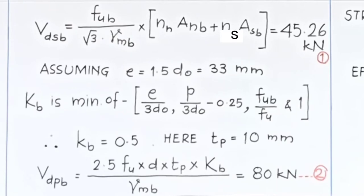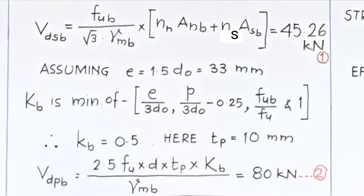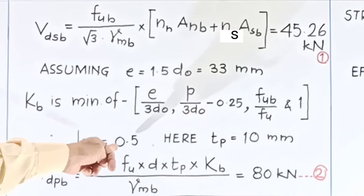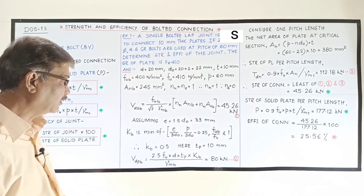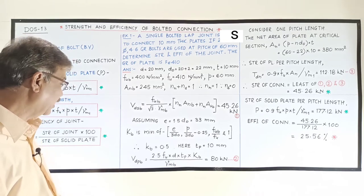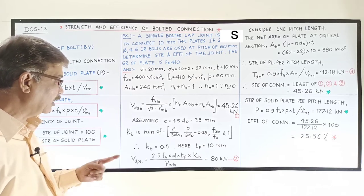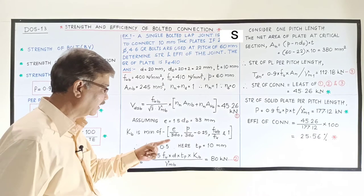The thickness of the plate is 10 mm, so TP = 10 mm. The design bearing strength is: VDPB = 2.5 × FU × D × TP × KB / γMB. Substituting FU = 410, D = 20 mm, TP = 10 mm, KB = 0.5, γMB = 1.25, and dividing by 1000 gives VDPB = 80 kN. This is the second value calculated.